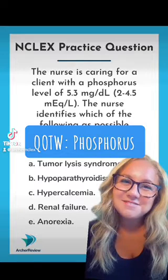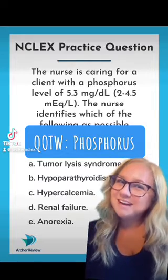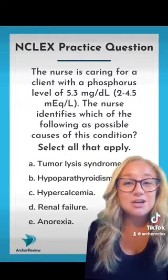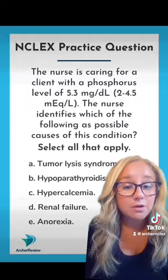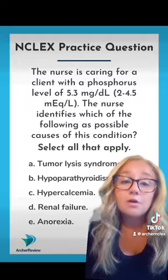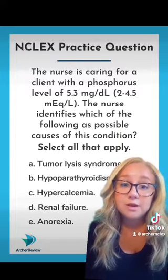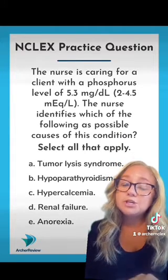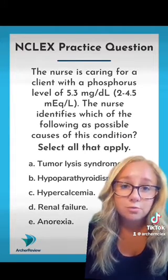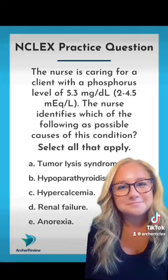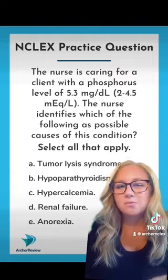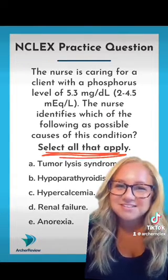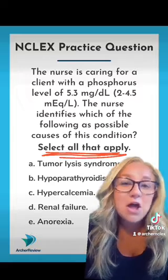Happy Monday, Archer Review. Time to talk Phosphorus. You've got a client with a Phos level of 5.3. You see the normal reference range here: 2 to 4.5. So what can possibly cause this condition? We've got to select all that apply.